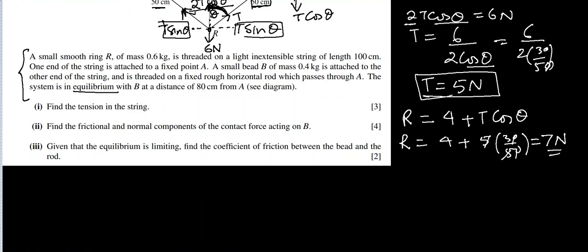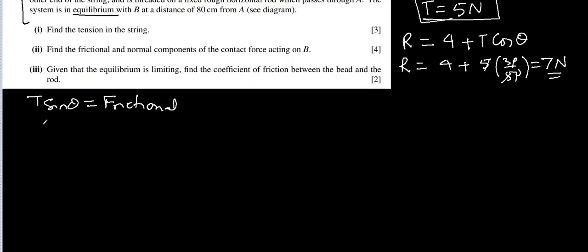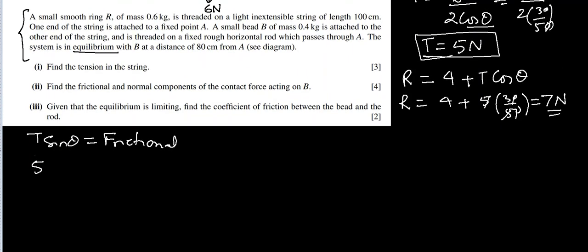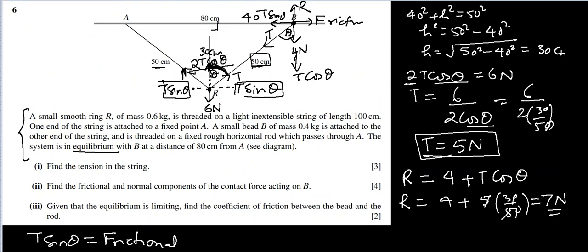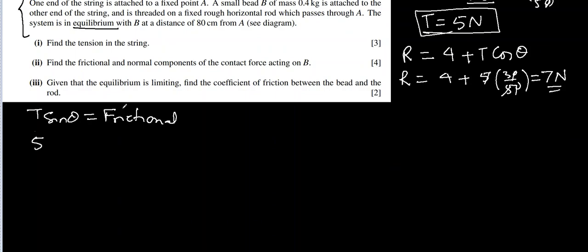So let me write that one: T sine theta is same as friction. T is 5, sine theta will be opposite over hypotenuse, so opposite is 40 over 50. That comes out to be 4 Newton.